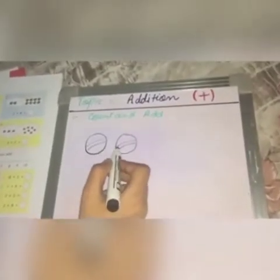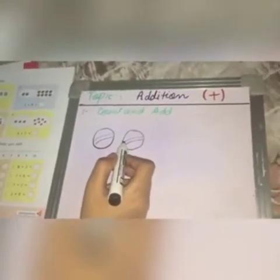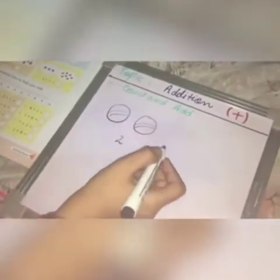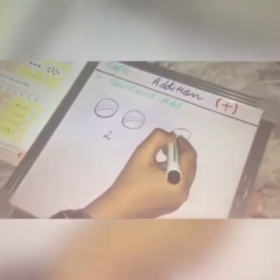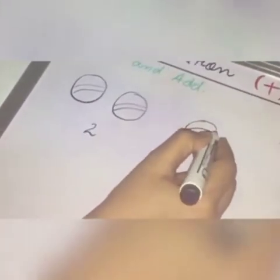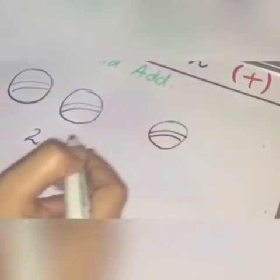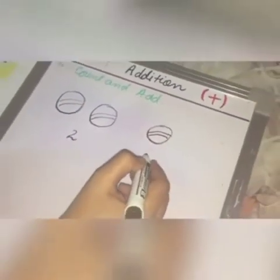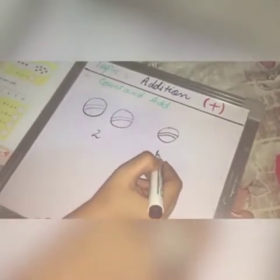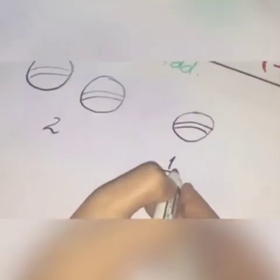Now Ali has two balls. How many balls does Ali have? Ali has two balls. His friend gave him one more ball. How many balls did his friend give him? One more ball.